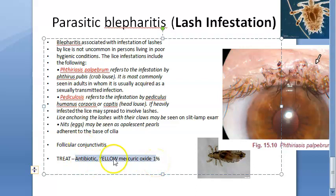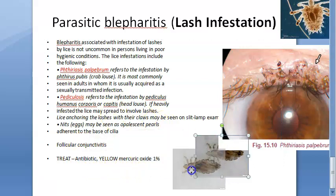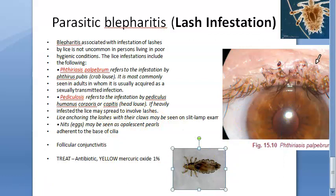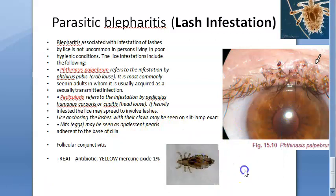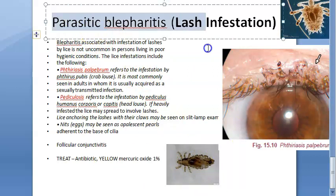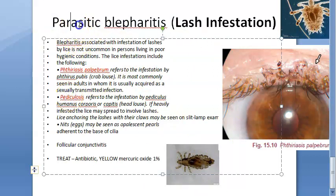The antibiotic and yellow mercuric oxide treatment is specifically for the eye. Head lice affecting other parts of the body will need to be treated separately — this treatment is only for the eyelash and eye component of the infestation.